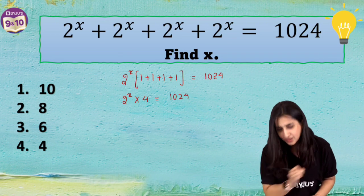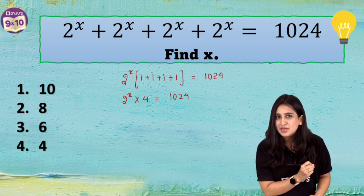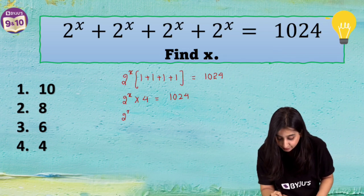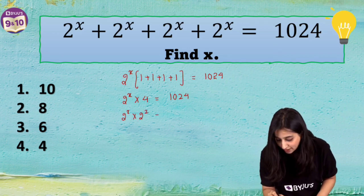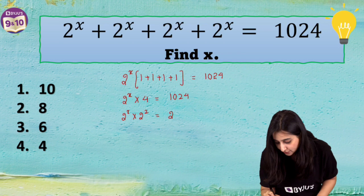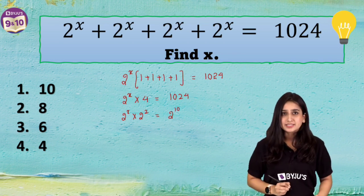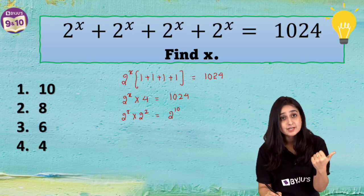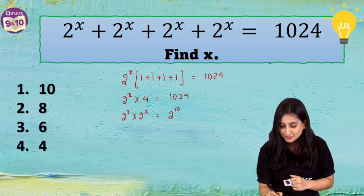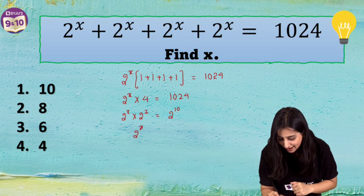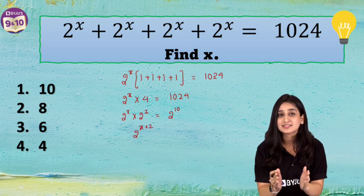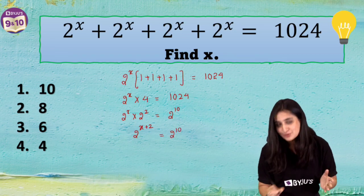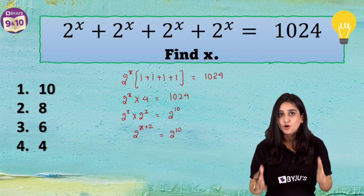Can we make the bases the same? On the left hand side, if I rewrite 4 as 2 squared, and on the right hand side if I rewrite 1024 as 2 to the power 10 — we can do that, right? So now on the right hand side we have 2 to the power 10, and the bases are the same.